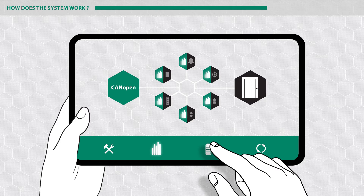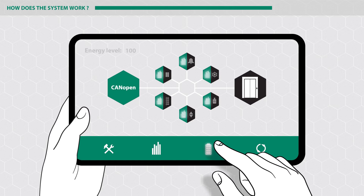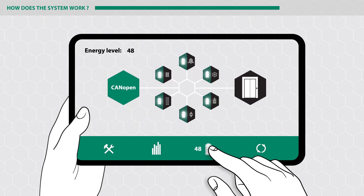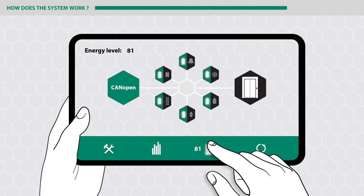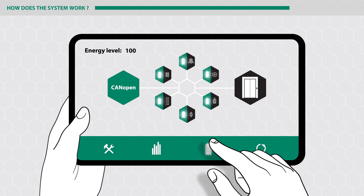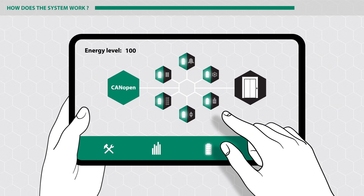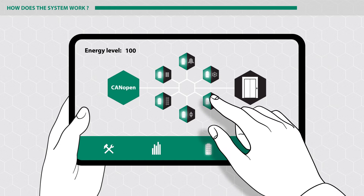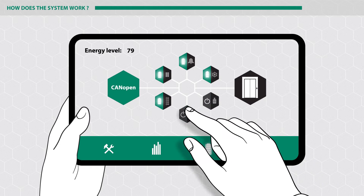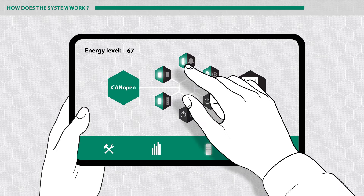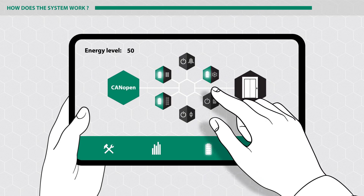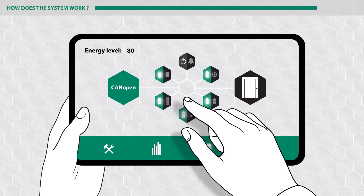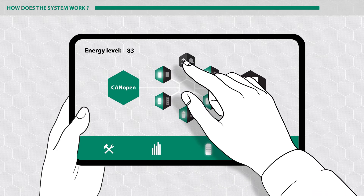The integrated energy management provides a method for continuous monitoring and for reducing energy consumption of elevators. By activating different standby modes in the components, the energy consumption of the elevator can be controlled as required. Thus, CANopenLift provides a uniform manufacturer-independent method for energy saving.